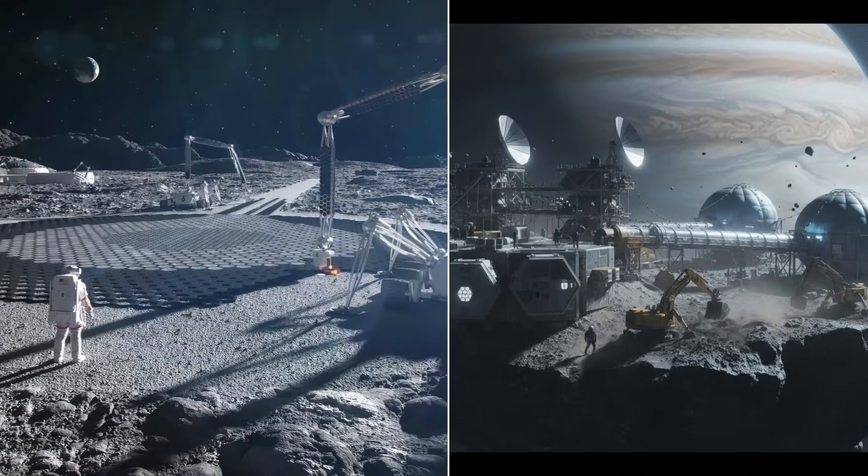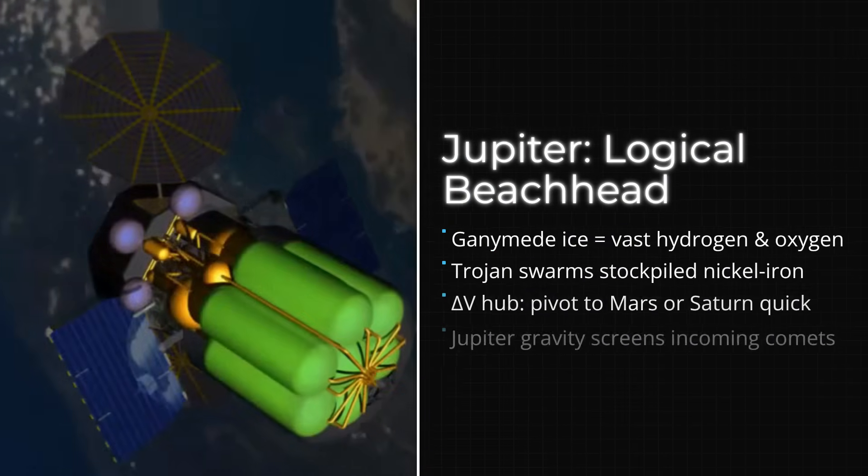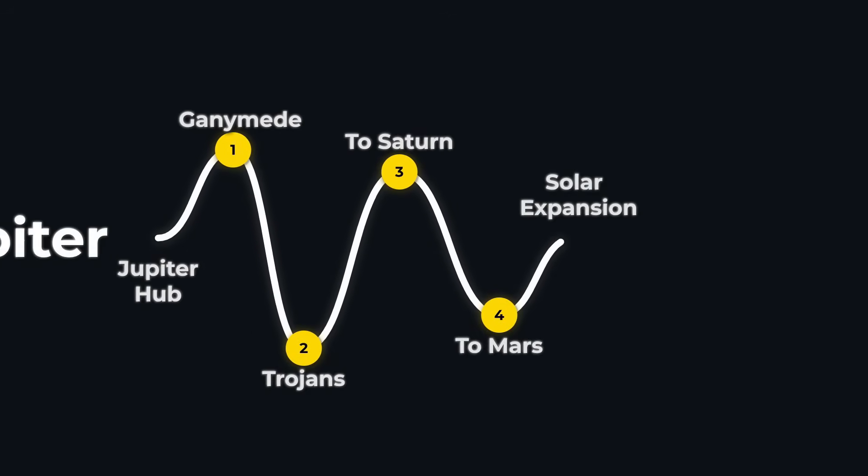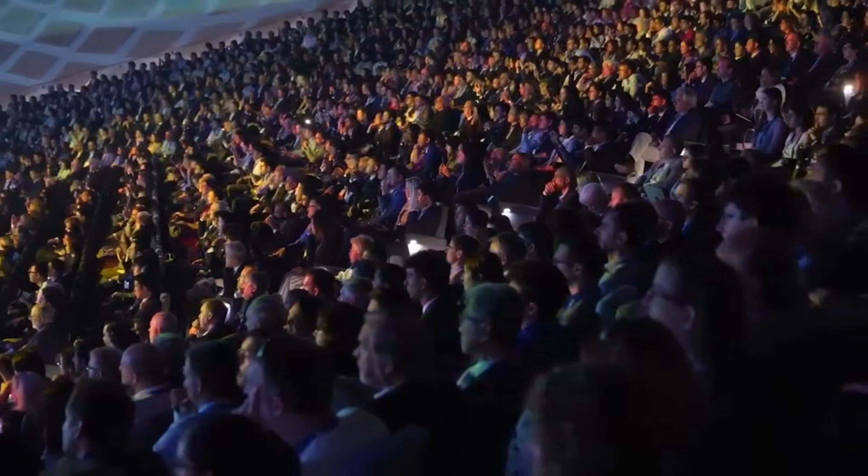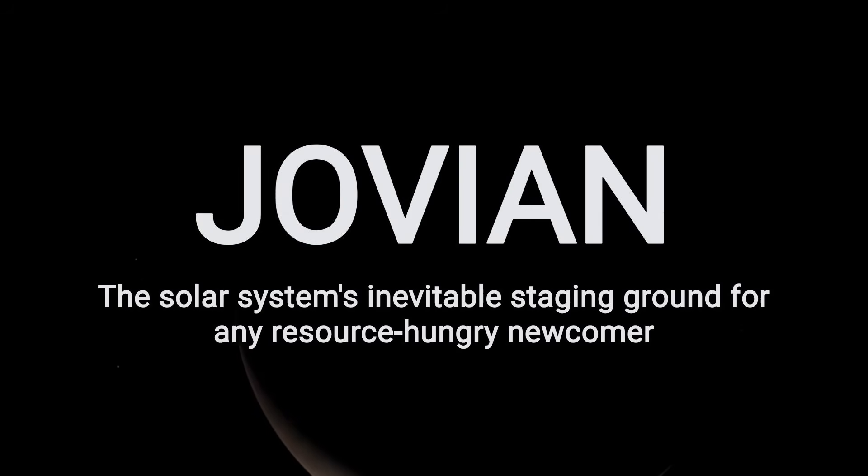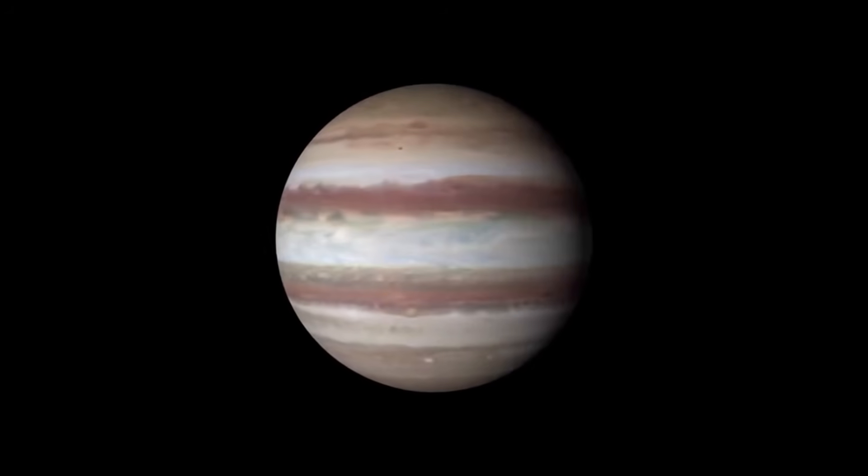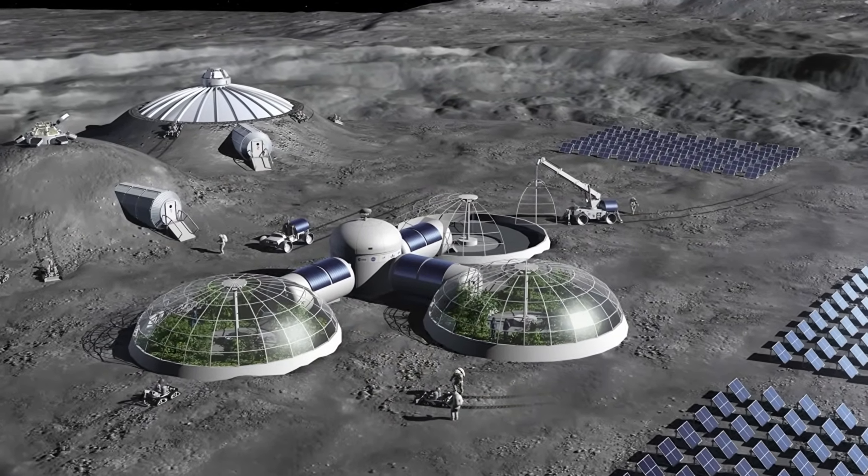From a strategic perspective, establishing operations on Ganymede or among the Trojans would provide access to propellant, metals, and a stable platform for expansion—outward to Saturn, inward to Mars, or wherever opportunity arises. In planetary science circles, this isn't just idle speculation. It's a scenario grounded in the cold logic of resource availability and orbital mechanics. The question isn't whether Jupiter's system is valuable—it's why, if you could choose anywhere, you'd choose to start there.